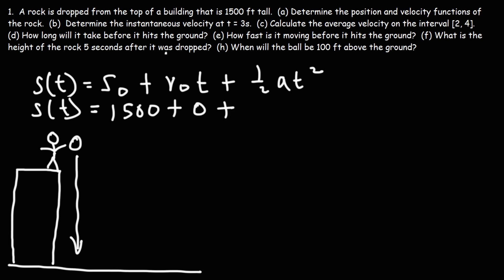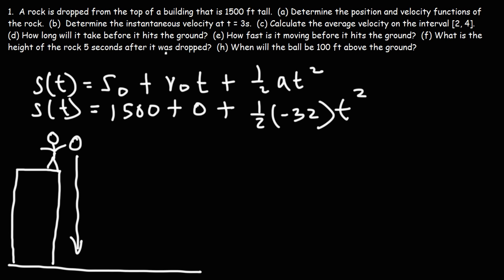Now, what about the acceleration in the y direction? Keep in mind, we're dealing with feet, so we want the acceleration in feet per second squared — we're going to use 32, not 9.8 meters per second squared. Gravity brings things down, so the acceleration in the y direction is negative 32 feet per second squared. Therefore, our position function is s(t) = 1500 minus 16t squared.